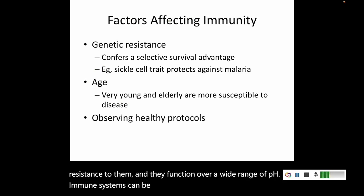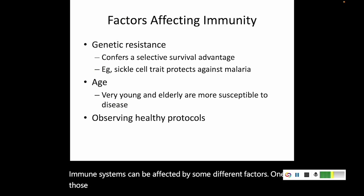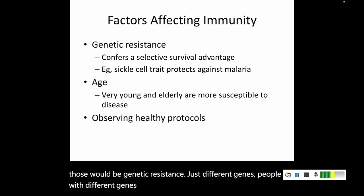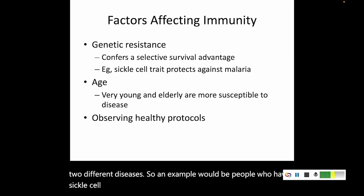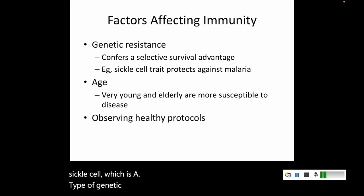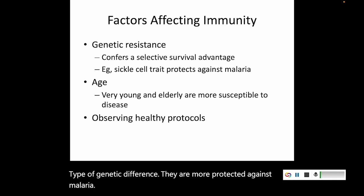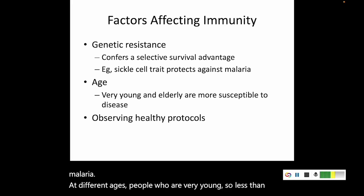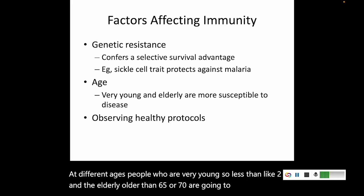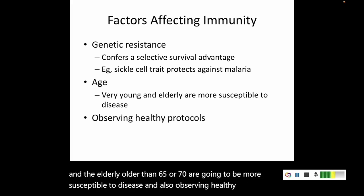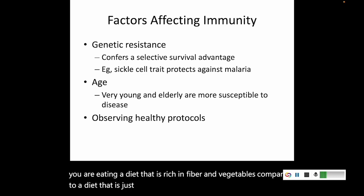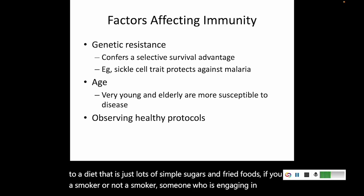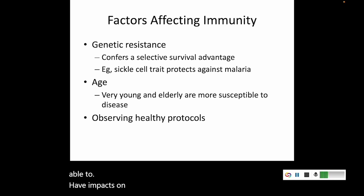Immune systems can be affected by several different factors. One of those is genetic resistance — people with different genes have various levels of susceptibility to different diseases. An example would be people who have sickle cell, which is a type of genetic difference — they are more protected against malaria. At different ages, people who are very young, less than about two, and the elderly, older than 65 or 70, are going to be more susceptible to disease. Observing healthy protocols also matters — eating a diet rich in fiber and vegetables versus lots of simple sugars and fried foods, whether you are a smoker, and whether you are engaging in safe sex practices — all of these have impacts on your immunity.